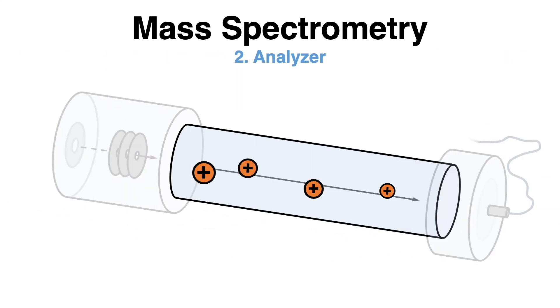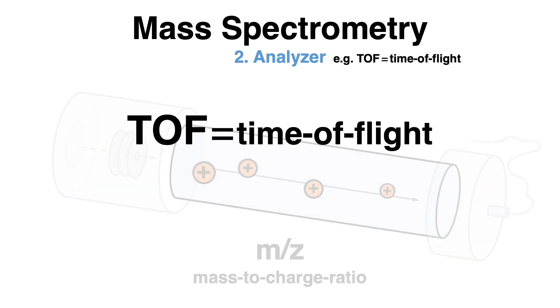There are various analyzers in mass spectrometry, all of which aim to determine the mass-to-charge ratio of ions. One commonly used analyzer type is the time-of-flight analyzer.